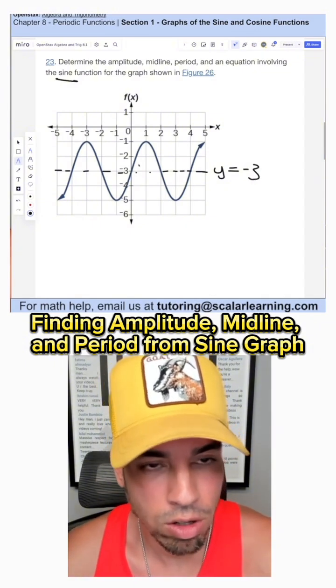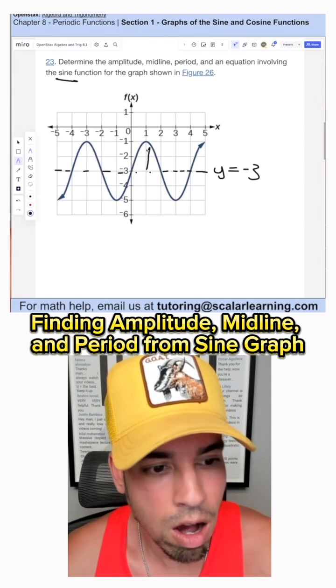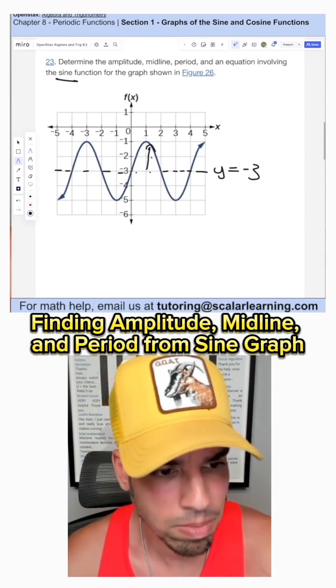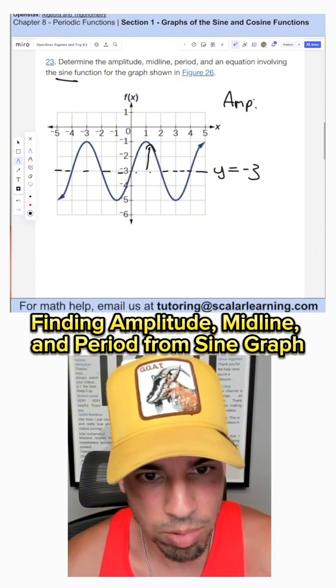And that's also going to be the same value as our d variable. The amplitude is the distance up from the midline. It's also down, but it's the same thing. So the amplitude goes up by two and down by two. The amplitude is two.